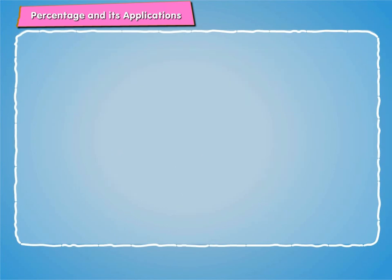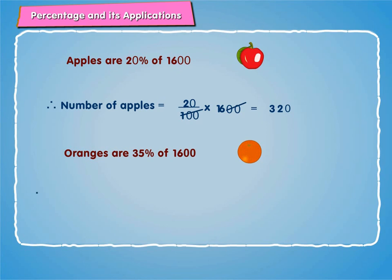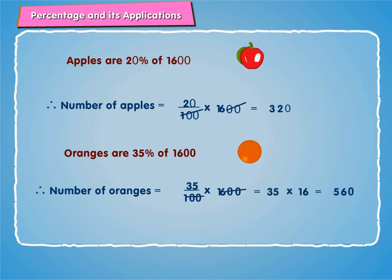Here we are given that apples are 20% of 1600. Therefore, number of apples is equal to 20/100 into 1600, which is equal to 320. Oranges are 35% of 1600. Number of oranges is equal to 35/100 into 1600, which is equal to 560.